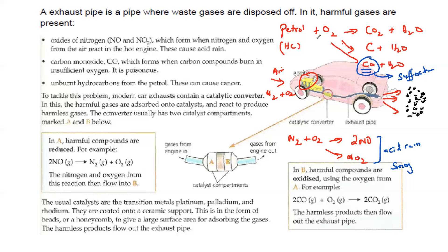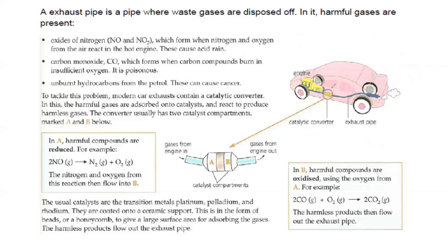So how can we overcome this? How can we reduce the emission of carbon monoxide and oxides of nitrogen? Inside the car there is a catalytic converter. It takes in the oxides of nitrogen and carbon monoxide, and converts them into nitrogen gas and carbon dioxide, making them less harmful.